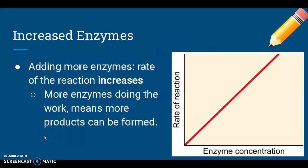First is increasing enzymes. If you add more enzymes to a reaction, then the rate of the reaction is going to be faster, because there are more enzymes doing the work breaking down or building substrate molecules, meaning that more products can be formed. As the enzyme concentration goes up, so does the rate of the reaction. This would be like having multiple people breaking toothpicks — two people breaking toothpicks would break them much faster than just one person.